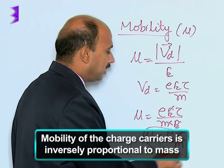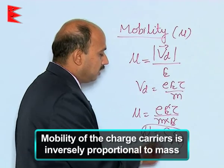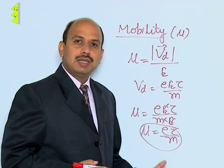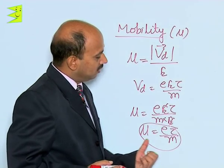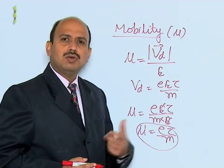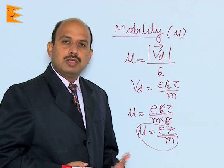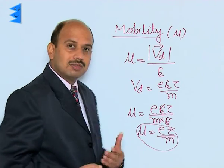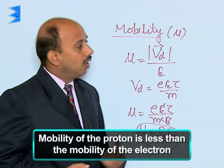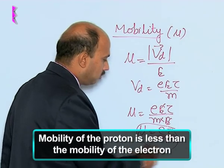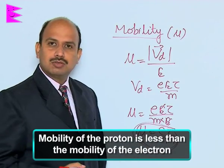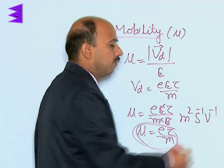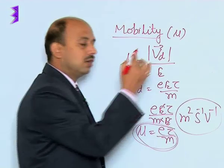The mobility of the charge carriers is inversely proportional to mass. Whether you are taking positive charges or negative charges, mobility is positive for both, but it is inversely proportional to mass. If you compare mobility of electrons and protons, the mass of the proton is more than the mass of the electron, so mobility of the proton is less than the mobility of the electron. The SI unit of mobility is meter squared per second per volt.